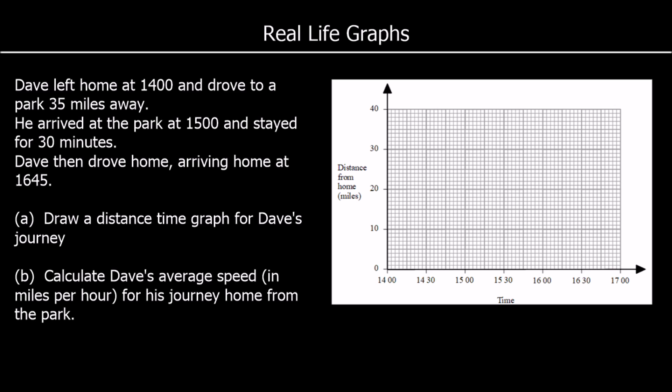And another distance-time graph. Dave left home at 1400 or 2 o'clock, 2pm, and drove to a park 35 miles away. So he left home here. He arrived at the park at 1500 and it's 35 miles away. So I'm going to draw it as I go. 35 miles at 3 o'clock. He stayed there for 30 minutes. So that's going to be half past 3. Dave then drove home, arriving at home at 1645. So back home again. So distance from home will be 0 at 1645. So there's our distance-time graph. I'm just going to join up the dots.